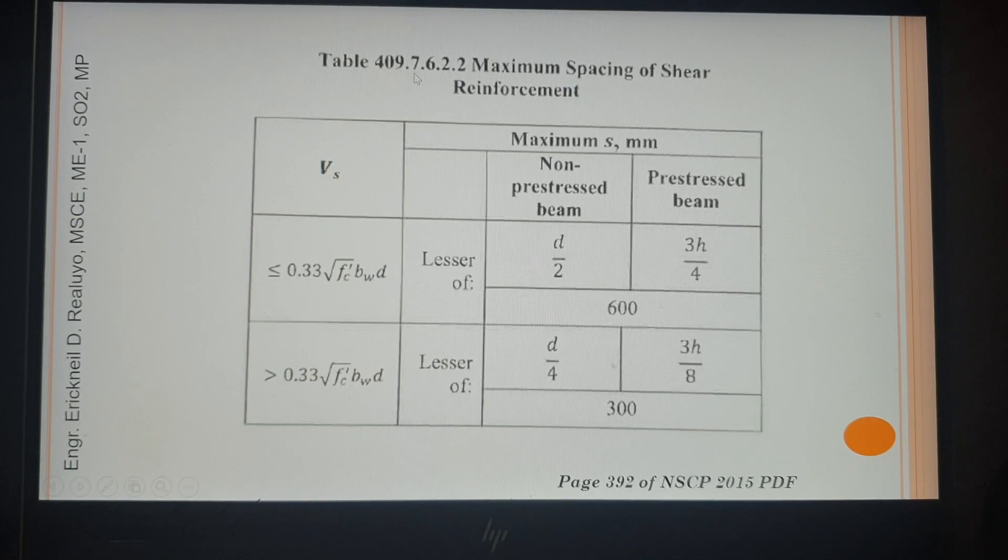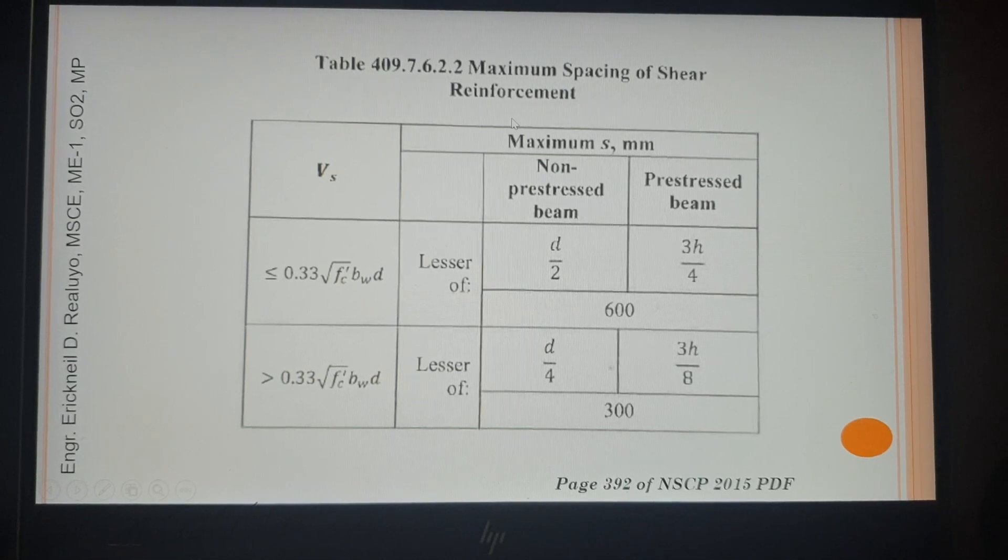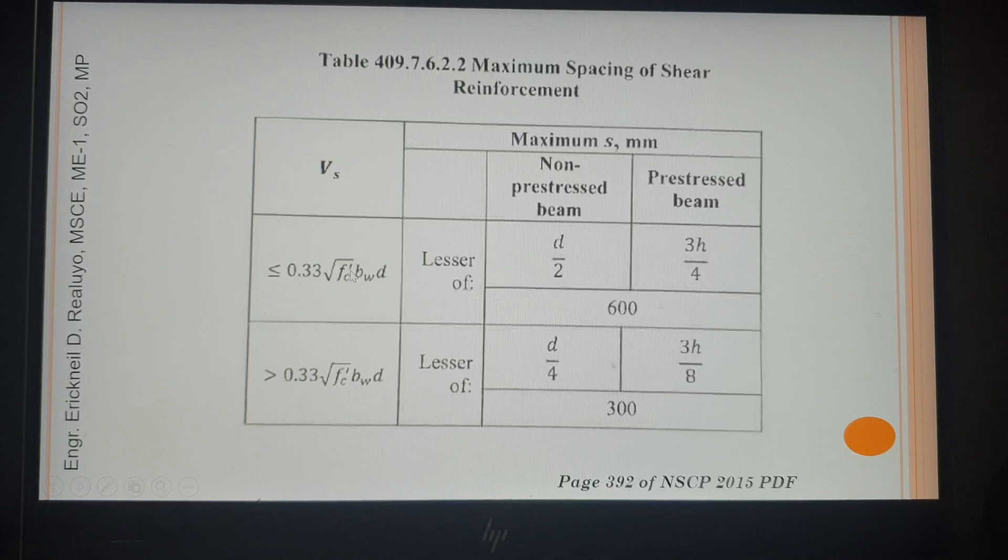By the way, in this table, the maximum spacing of shear reinforcements, this provision was discussed in our previous clip. When VS is less than 0.33 squared of F'cbd, when VS is greater than 0.33 squared of F'cbd, ito ang mga values. Do not mind these two values because these two are for pre-stressed beams.